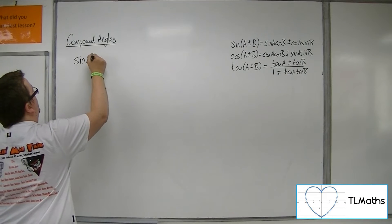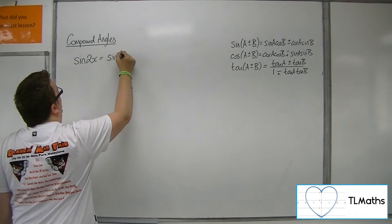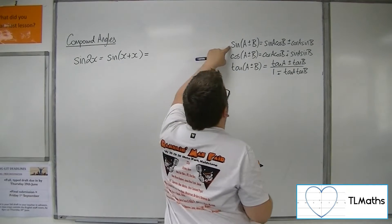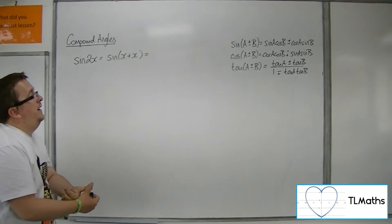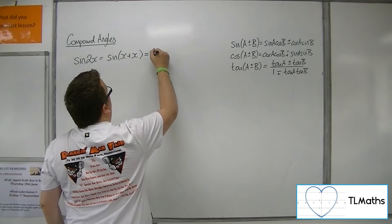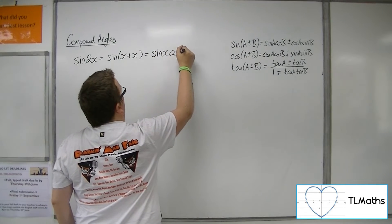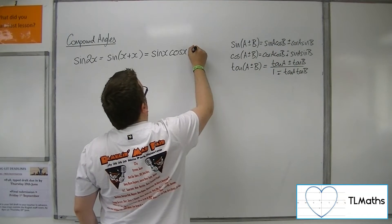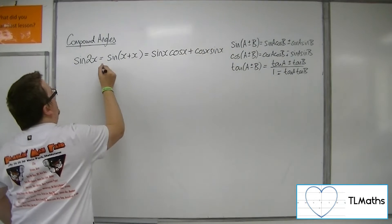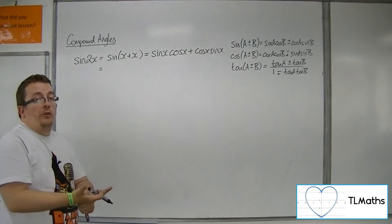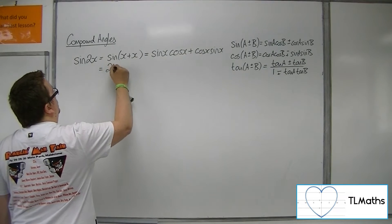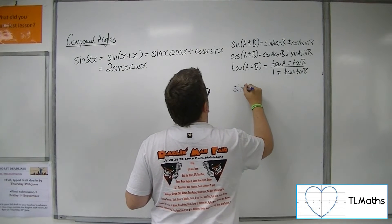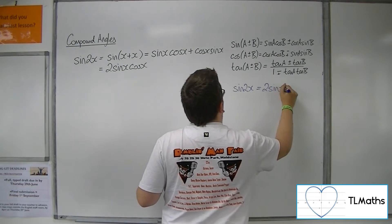So sine of 2x — you can write that as sine of x plus x, and use the compound angle formulae. If a is x and b is x, then this is sine x cos x plus cos x sine x. Because sine x cos x is the same as cos x sine x, this simplifies to 2 sine x cos x. So the double angle formula is: sine 2x equals 2 sine x cos x.